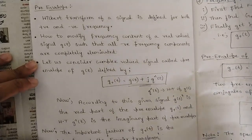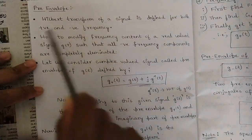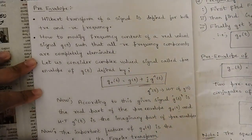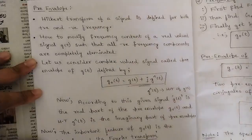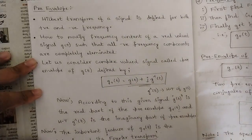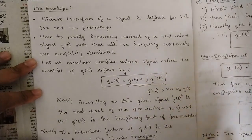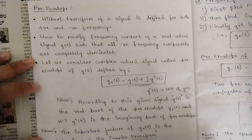What is this pre-envelope? The Hilbert transform of a signal is defined for both positive and negative frequencies. Since the phase reversal takes place for both positive and negative frequencies — that is, for plus 90 degrees as well as minus 90 degrees — the phase reversal would be taking place in both clockwise and anti-clockwise directions. So it is defined for both positive as well as negative frequencies.